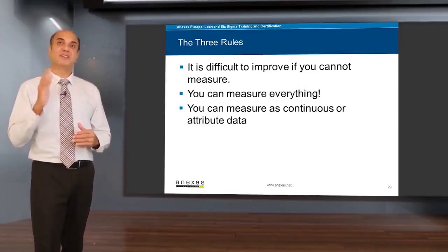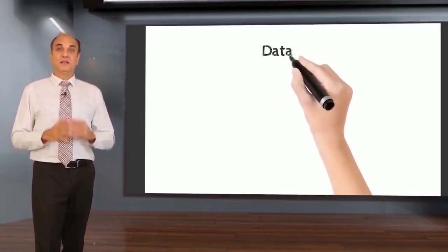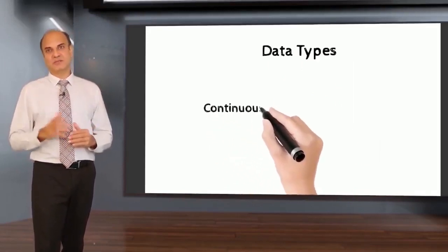Now let me tell you how you can measure anything. There are two types of data: continuous data and attribute data.